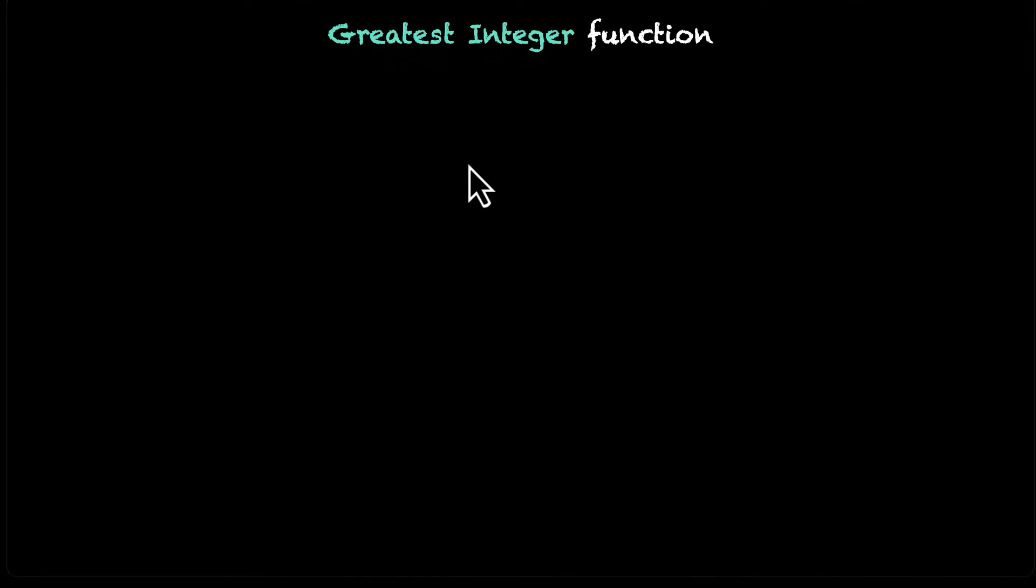In this video, we're going to talk about the greatest integer function. This is how we define it: f: R → R defined by y = f(x) = [x], and we use square brackets for this function.